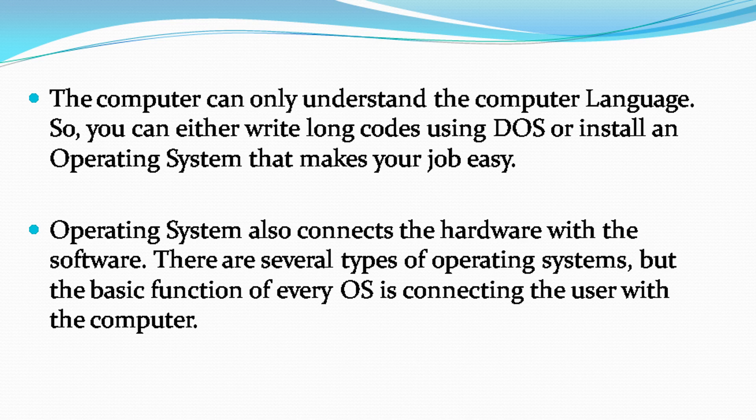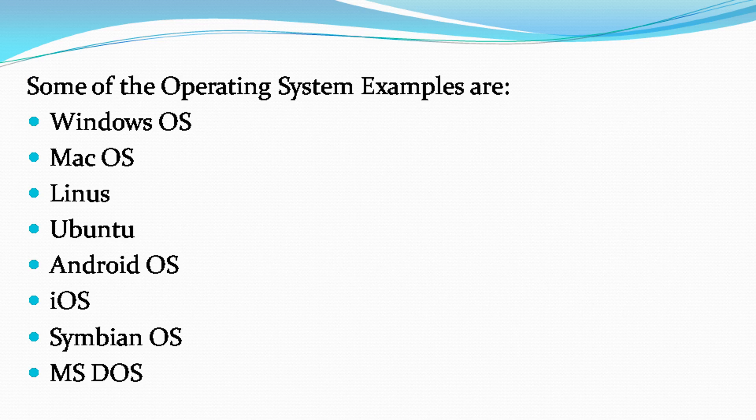The operating system also connects the hardware with the software. There are several types of operating systems, but the basic function of every OS is connecting the user with the computer. Some operating system examples are Windows OS, Mac OS, Linux, Ubuntu, Android OS, iOS, Symbian OS, and MS-DOS.